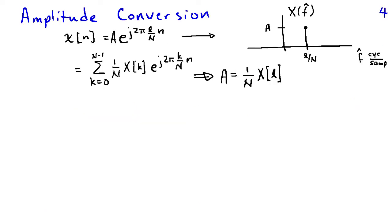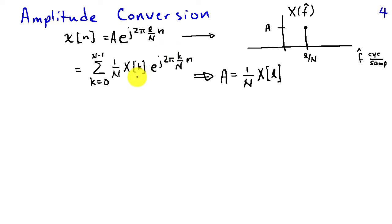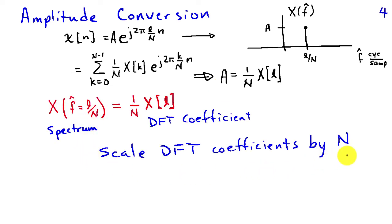There is also the necessity for converting the amplitude. Taking a signal that is a complex sinusoid at frequency l over N with amplitude a, the spectrum should have coefficient a at frequency l over N. Expanding x of n in terms of the DFT as a weighted sum, we find that a equals 1 over N times x of l. So to recover the amplitude of the discrete time signal spectrum, we divide the DFT coefficients by N, the number of samples — a consequence of how the DFT is defined.